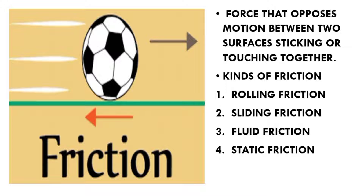We have four kinds of friction. Number one, rolling friction. Two, sliding friction. Three, fluid friction. And number four, static friction.